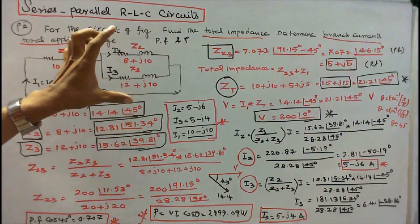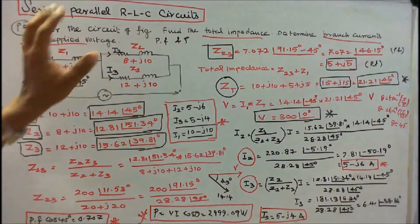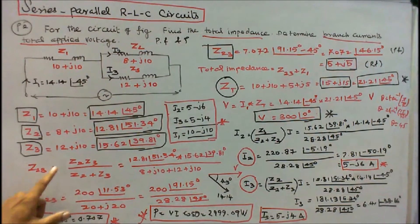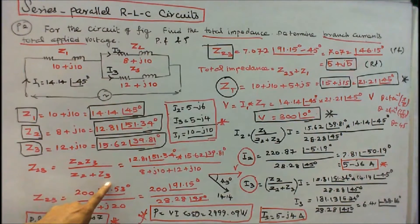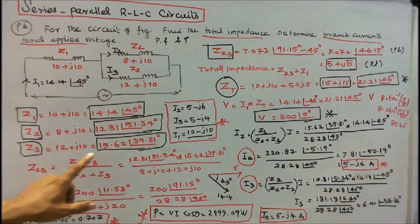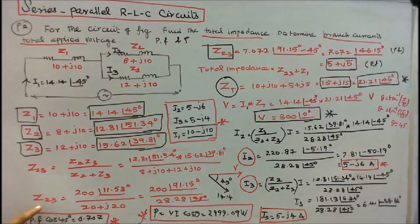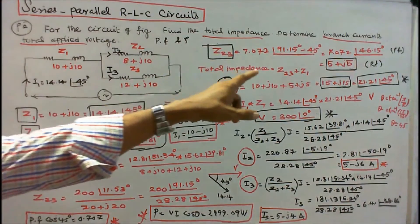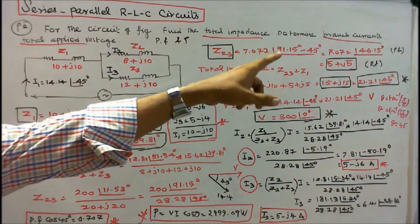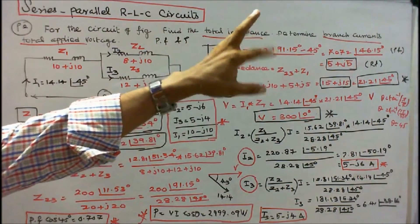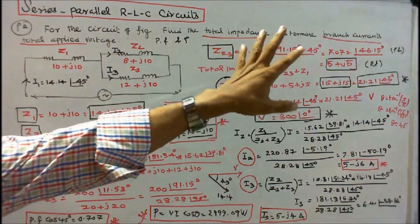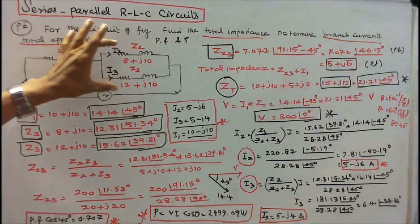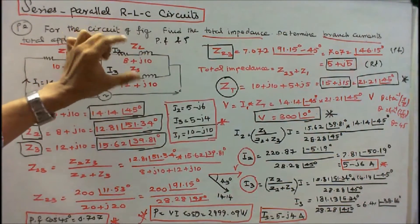Impedances Z2 and Z3 are connected in parallel. The equivalent impedance is Z23 = Z2·Z3 divided by Z2 + Z3. Substituting all values for Z2, Z3 and adding Z2 + Z3, we get Z23 = 7.072∠46.15° in polar form, which is 5 + j5 in rectangular form. That is the equivalent impedance of Z2 and Z3.